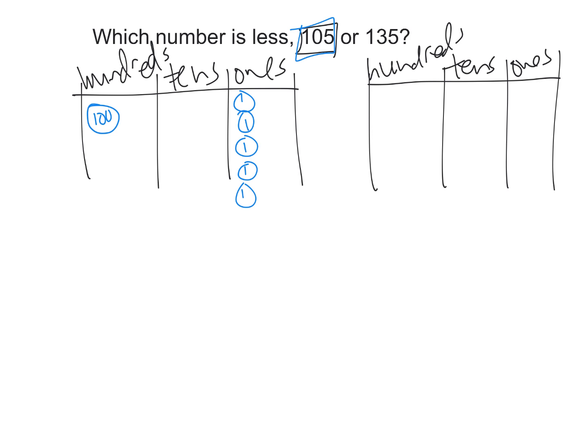So there is our model for 105, and then let's model 135 in red. That's going to look like 100, and then 10, 20, 30, and 5 is 1, 2, 3, 4, 5, right there. So there's 135.